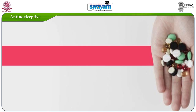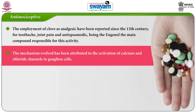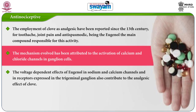The next is antinociceptive property. The employment of clove as analgesic has been reported since the 13th century for toothache, joint pain, and antispasmodic, with eugenol being the main compound responsible for this activity. The mechanism has been attributed to the activation of calcium and chloride channels in ganglion cells. The voltage-dependent effects of eugenol in sodium and calcium channels and in the receptors expressed in the trigeminal ganglion also contribute to the analgesic effect of clove.